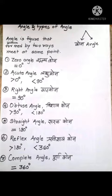The first one is zero angle. The angle whose measure of angle is 0 degree is called zero angle.